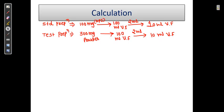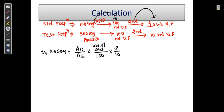I am giving you a direct equation that will help you calculate the assay. Percentage assay equals absorbance of unknown divided by absorbance of standard, into weight of standard divided by 100 into 2 by 10. We have transferred into 100 ml volumetric flask, then diluted 2 ml to 10 ml volumetric flask. This is for standard.